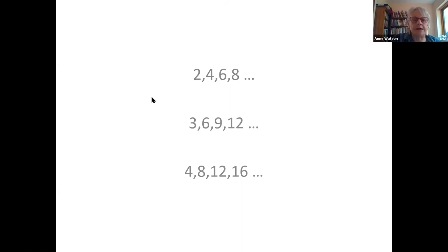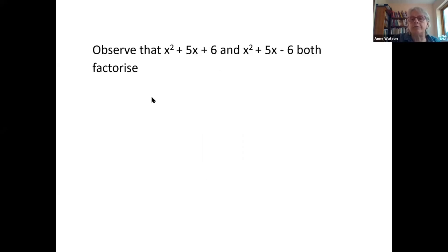So from this kind of thing you can build up generalizations about arithmetic progressions. You can build up rules because you're controlling variation. This is an interesting collection.